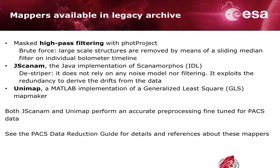The third method, Unimap, is a MATLAB implementation of a generalized least-squares method that uses a noise model for removing 1/f noise. For both JSCANAM and Unimap mappers, an accurate pre-processing fine-tuned for PACS data is performed. I invite you to consult the PACS Data Reduction Guide for details and references about these mappers.